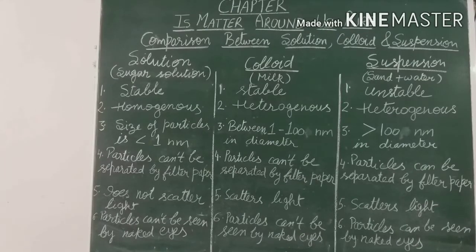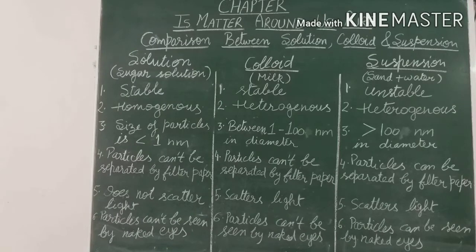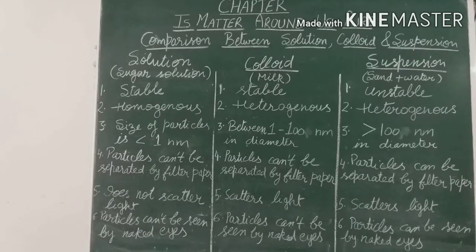When we stir sand in water to make a suspension, after some time you will see that the sand particles have settled down at the bottom, and the lighter sand particles are still moving in the water. This means the particles are not stable — they separate out. So suspension is unstable.